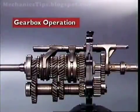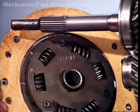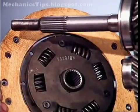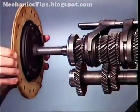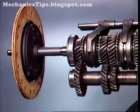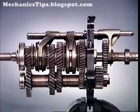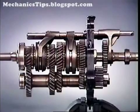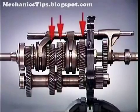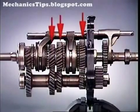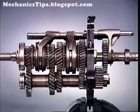This section examines gearbox operation in a rear-wheel drive manual transmission. The splines on the input shaft engage with the splines of the clutch driven plate. With engine rotation and the clutch engaged, the input shaft transfers its motion through the counter shaft to rotate the gears on the main shaft.